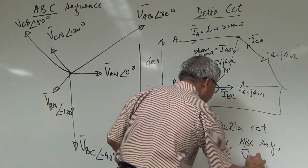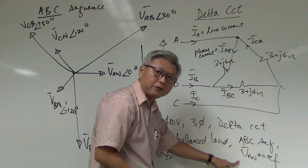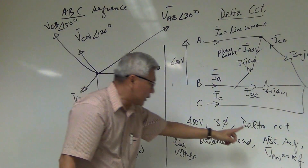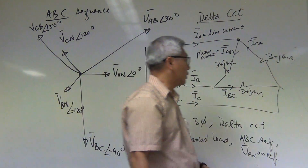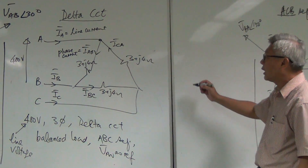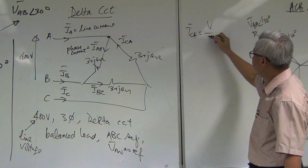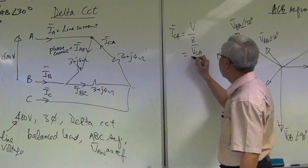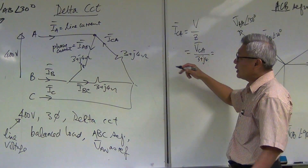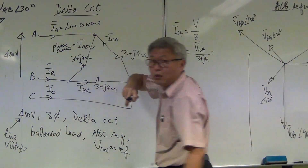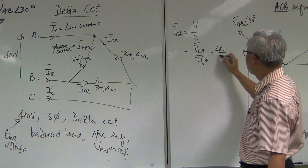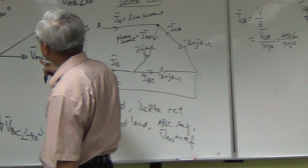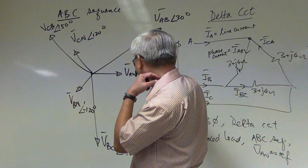The circuit works on ABC sequence and Van is the reference. Once you see ABC sequence with Van as reference, you use this phasor diagram. If the question says ACB sequence, you use the other phasor diagram. To calculate Ica, it equals Vca divided by Z — so Vca divided by three plus j4. Since line voltage is 400 volts, Vca is 400 volts. Looking at the phasor diagram for Vca gives the angle.